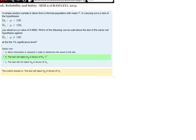This is question 3 from week 9 of the stats probability and stats quiz. It says a simple random sample is taken from a normal population with mean μ. In carrying out a z-test of the hypothesis where the null hypothesis is μ = 100 and the alternate hypothesis H₁ is μ < 100, you observe a p-value of 0.9952. Which of the following can be said about the test of the same null hypothesis against the alternate hypothesis that μ ≠ 100 at the 1% significance level?